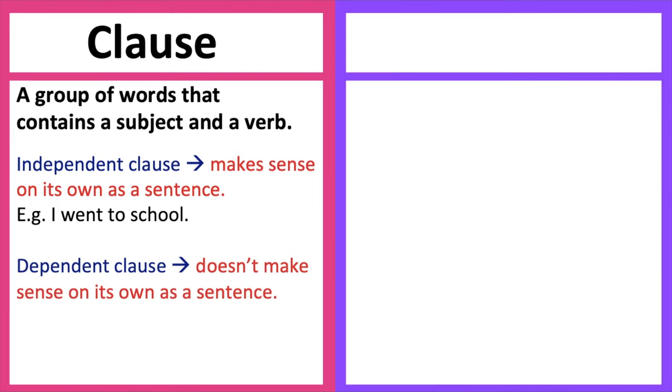The second type is a dependent clause. A dependent clause doesn't make sense on its own as a sentence. For example, although I wasn't feeling well. As we can see from this example, the clause doesn't convey a complete thought, and we would require more context to understand it.